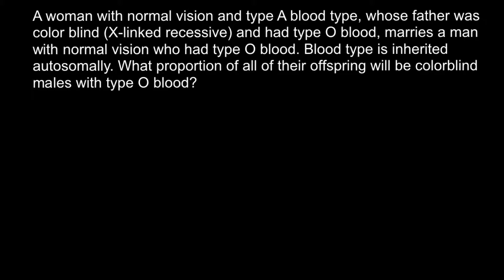Hello and welcome to Nikolai's genetics lessons. Today I'm going to talk about recessive X-linked trait — red-green colorblindness — and the ABO blood group system. Here is the problem: a woman with normal vision and type A blood, whose father was colorblind (X-linked recessive) and had type O blood, marries a man with normal vision who has type O blood. Blood type is inherited autosomally. What proportion of all offspring will be colorblind males with type O blood?